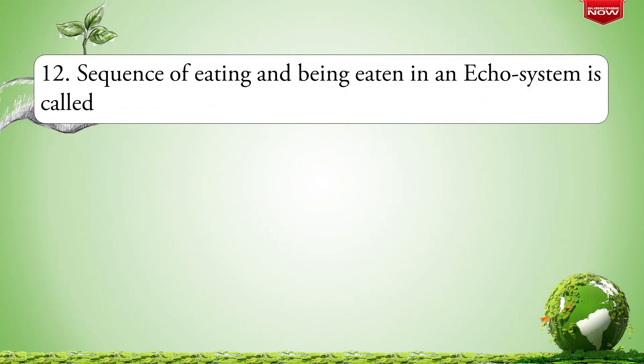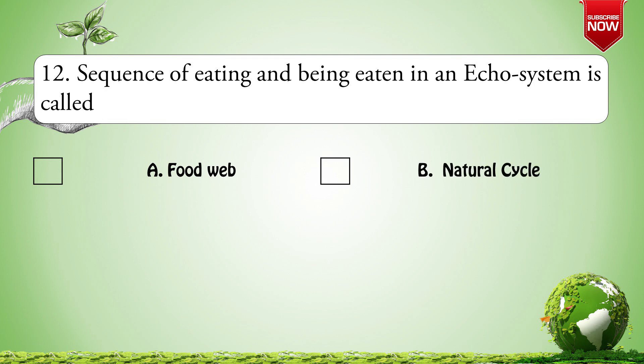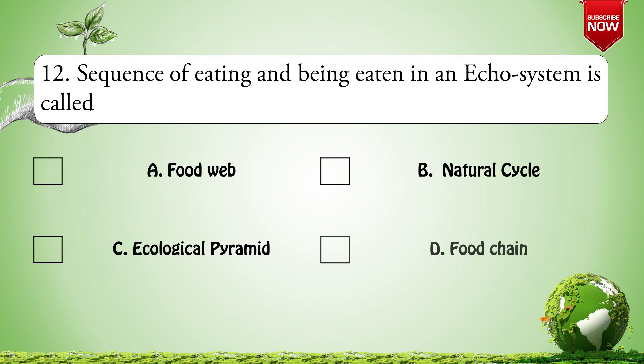Next question: The sequence of eating and being eaten in an ecosystem is called — Options are: A. Food web; B. Natural cycle; C. Ecological pyramid; D. Food chain. The correct option is D: Food chain.